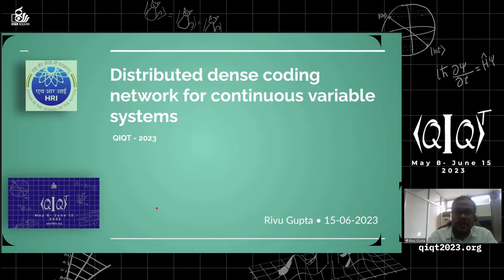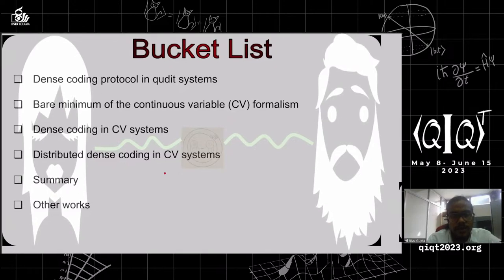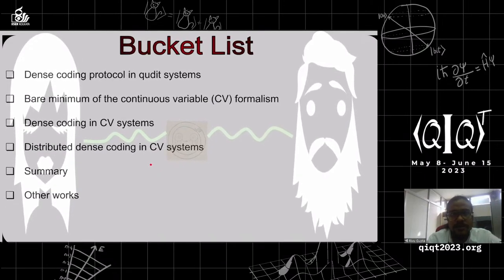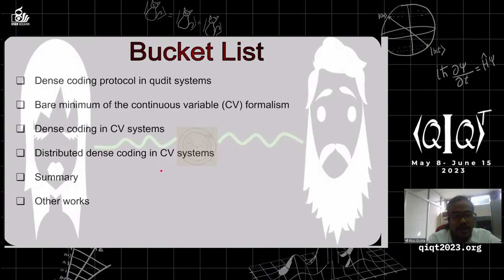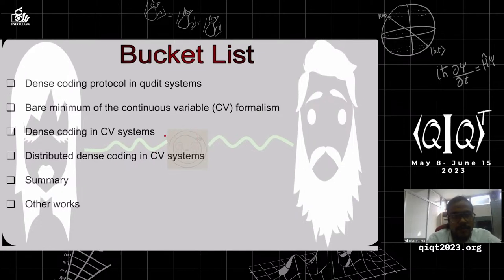Today I'll be talking about distributed dense coding network for continuous variable systems. The flow of my talk: first I'll briefly discuss the dense coding protocol, which is well known in discrete variable systems. Then I'll mention the continuous variable formalism, followed by dense coding in continuous variable systems proposed by Brownstein et al. Then I'll go into our main results on distributed dense coding in CV systems, and conclude with a summary.